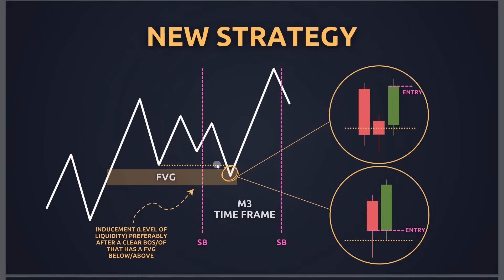Inside the silver bullet timing, on the three-minute chart, we look for price sweeping the inducement or low that has a fair value gap below it, then going up. When price comes to this fair value gap, we need to see one of two entry types. The first type: price takes the liquidity level and immediately comes back into the range. When we see this — whether it's a bearish or bullish candle — we can enter there and price goes up.